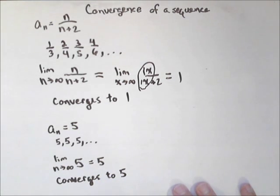And so this one converges to five. So when it's a constant, it's going to converge, and it's going to converge to whatever that number is. So that's how we can determine the convergence of a sequence.